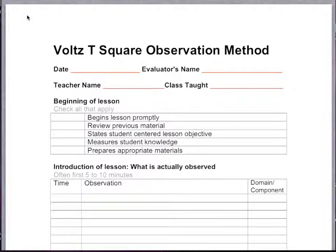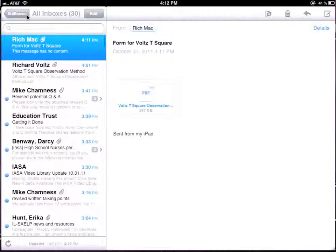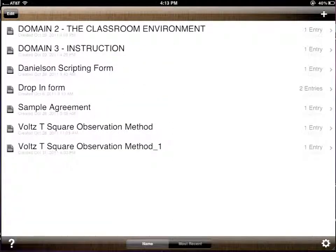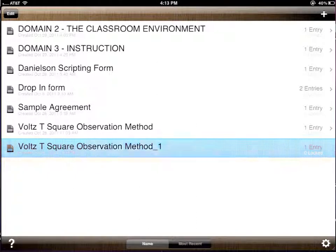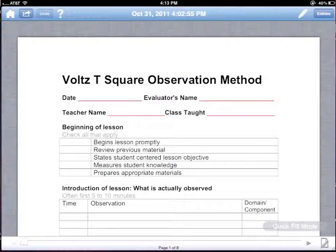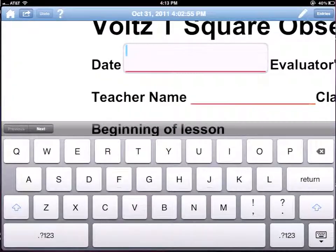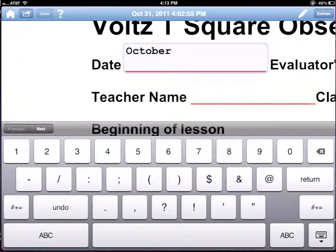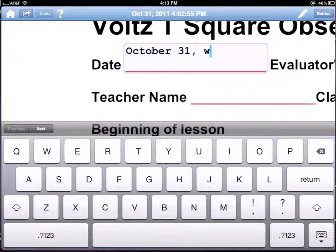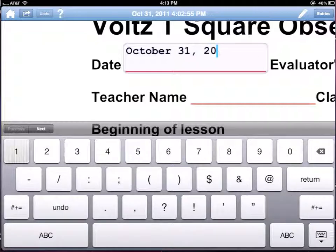Now I'm in the form itself. If I click inside the form, I can start putting in some of the information. I'm back at the home page, and I'm going to use this Voltz T-square observation method, which is our second one. As I click on this, you can see as I click the date, I can enter the date of today, the date that I'd be doing the observation.